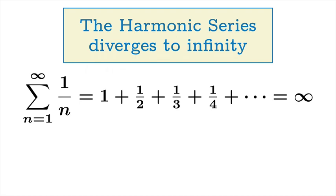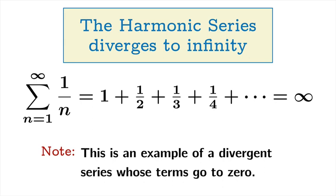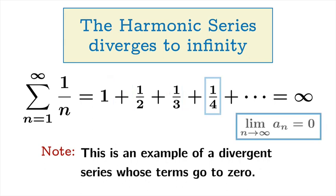And one last note. This is an example of a divergent series whose terms go to zero. If you look at these terms, the sequence of terms, you have one, 1/2, 1/3, 1/4, and so on. And so that limiting value is zero. And yet the series diverges to infinity.